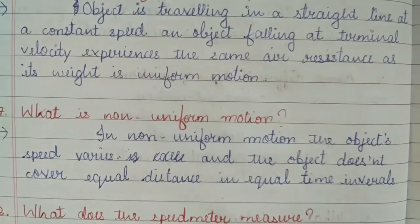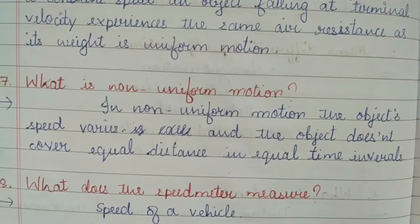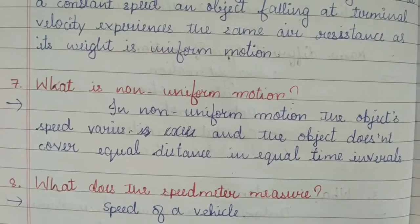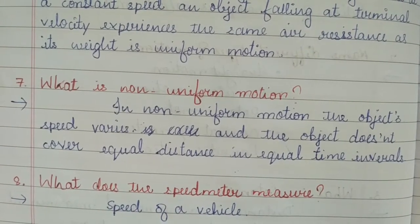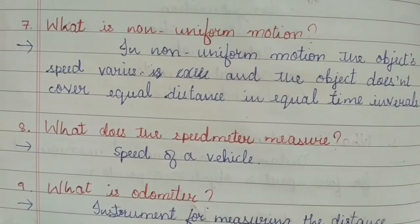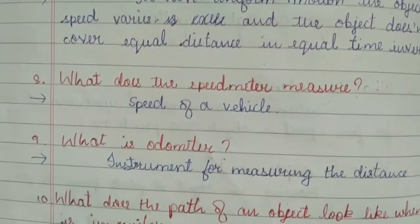What is non-uniform motion? Answer: in non-uniform motion the object's speed varies and the object doesn't cover equal distance in equal time intervals. What does the speedometer measure? Answer: speed of a vehicle.